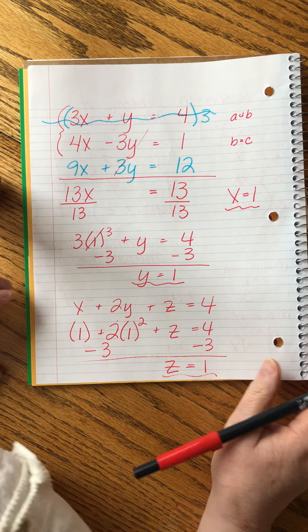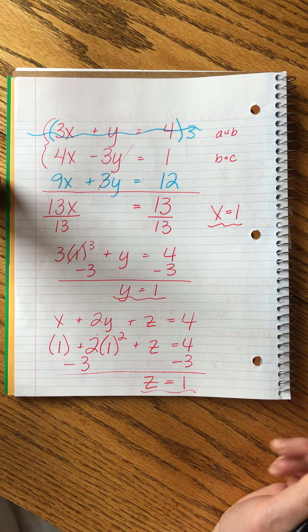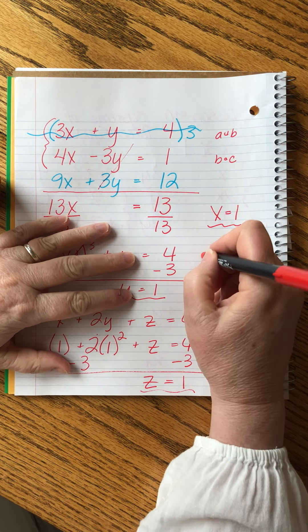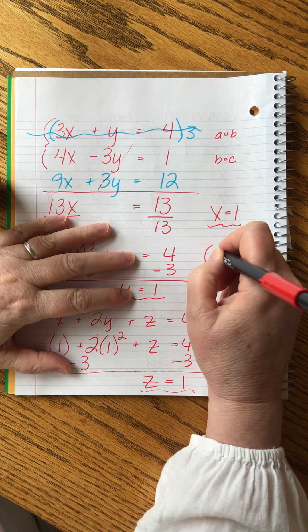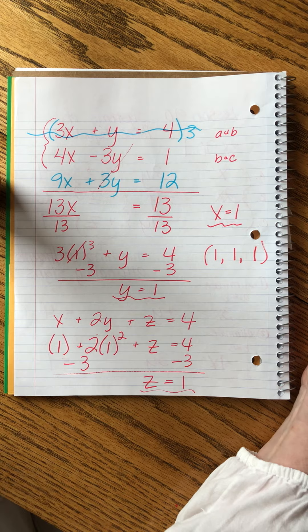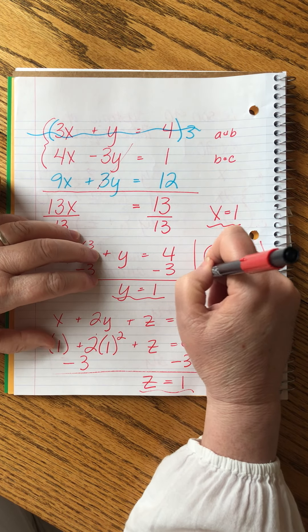So I write the answer as an ordered triple, not an ordered pair, but an ordered triple. 1, 1, 1. That's our final answer.